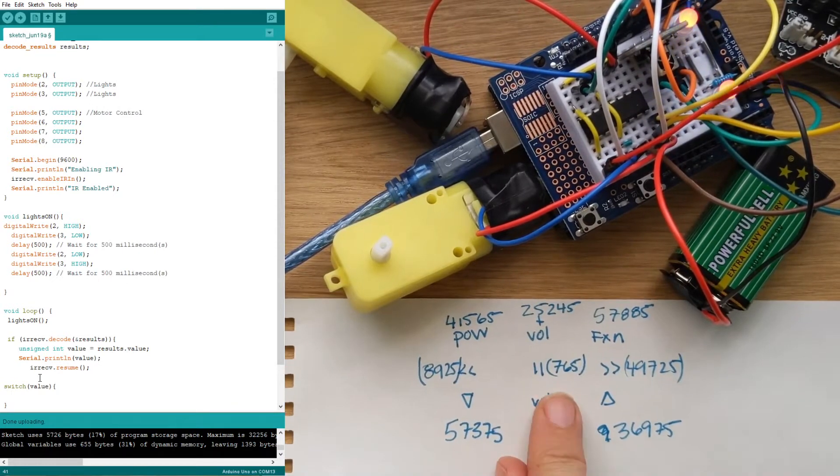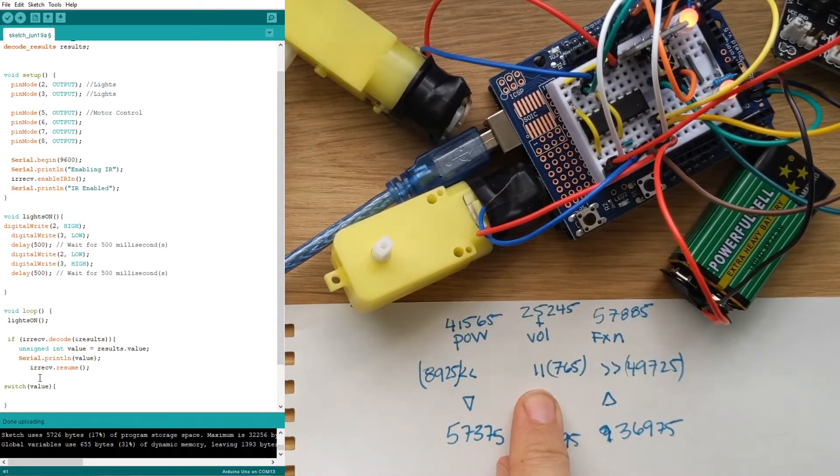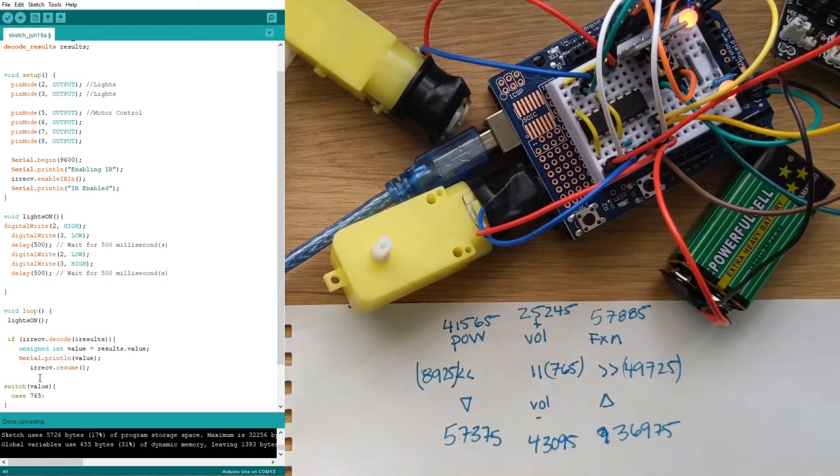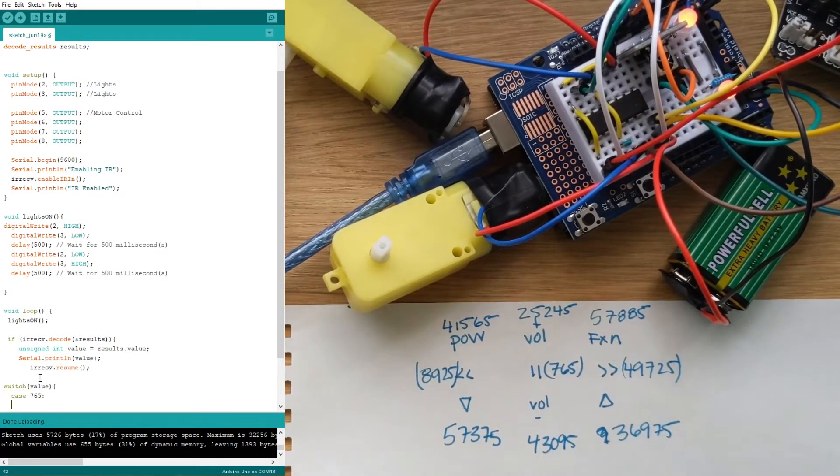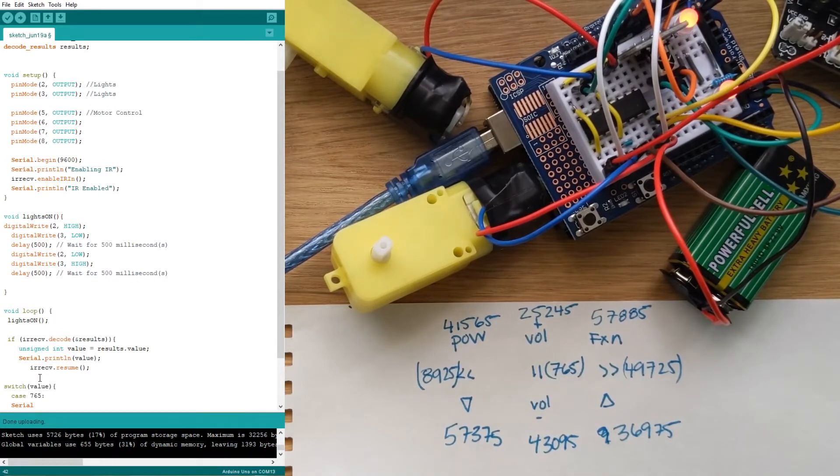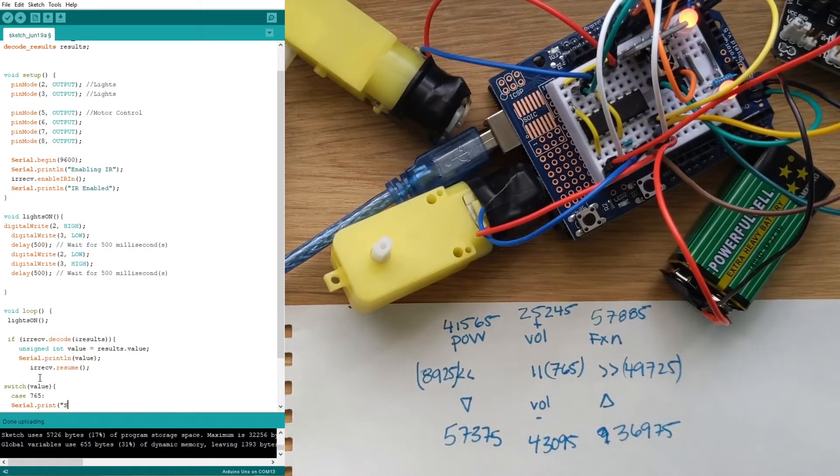For example, for case 765 when I hit pause I probably want everything to stop, so I would write case 765 and then you do a full colon there. Now we can write something, maybe I have to tell it to serial.print the word stop so that I know what is happening.